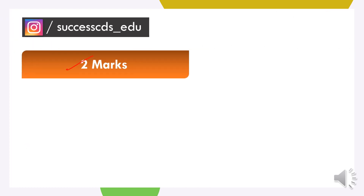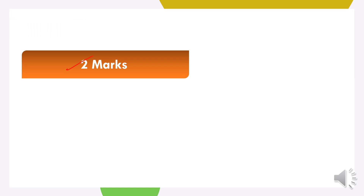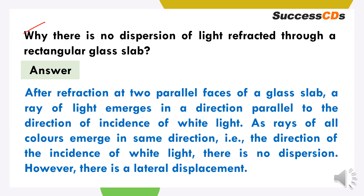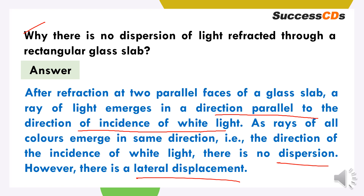We have two marks questions now. Why is there no dispersion of light refracted through a rectangular glass slab? After refraction through the two parallel faces of the glass slab, the ray of light emerges parallel to the direction of the incident light wave. As the rays of all the colours emerge in the same direction as the incident white light, koi bhi dispersion dekhne ko nahi milti. This is called lateral displacement.